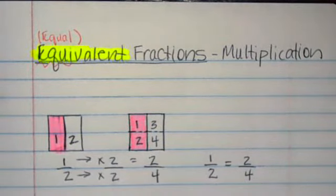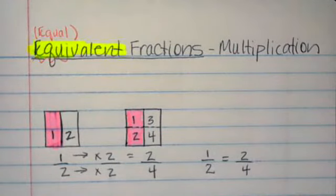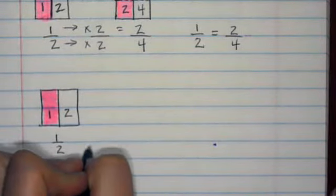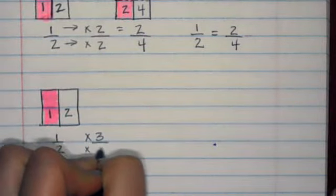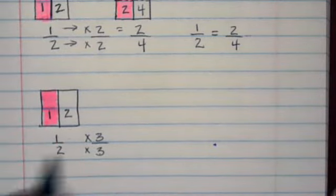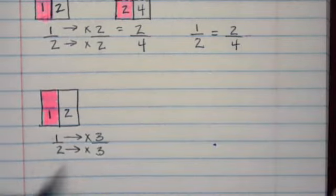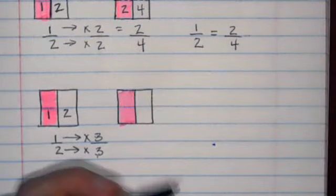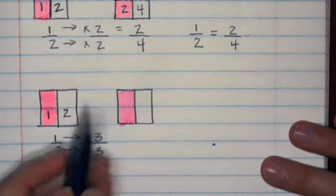We're going to try this again using a different number to multiply one half against. Again, we have the representation of one half. This time we're going to multiply one half by three thirds. So three thirds as a whole. We're going to multiply one by three and also the two by three, because what you do to the top, you have to do to the bottom.